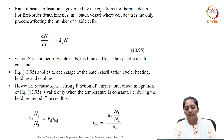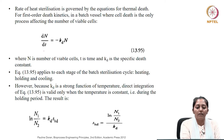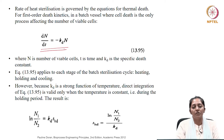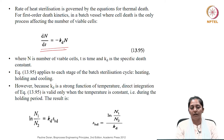Where cell death is the only process affecting the number of viable cells, the rate at which cell death is happening, being a first-order equation, is proportional to the number of cells. That proportionality constant is called the thermal death rate constant, and it has a negative sign because it is death — a reduction in cells which is happening.